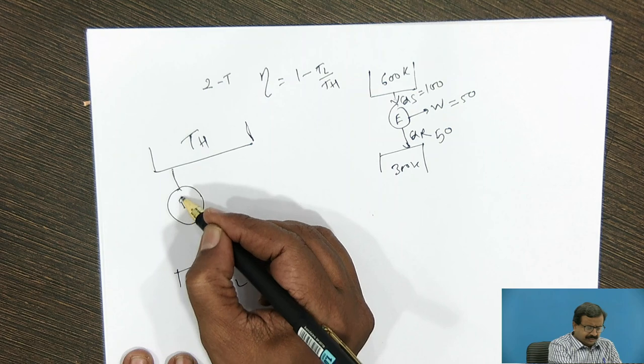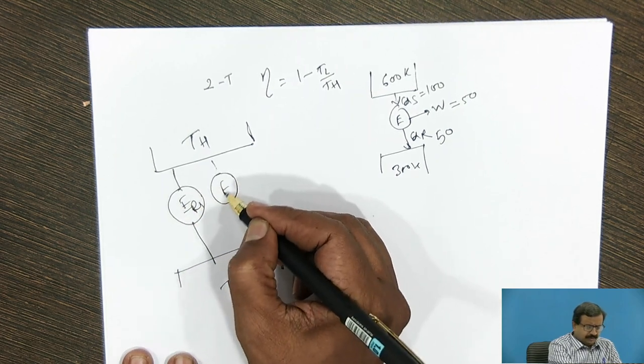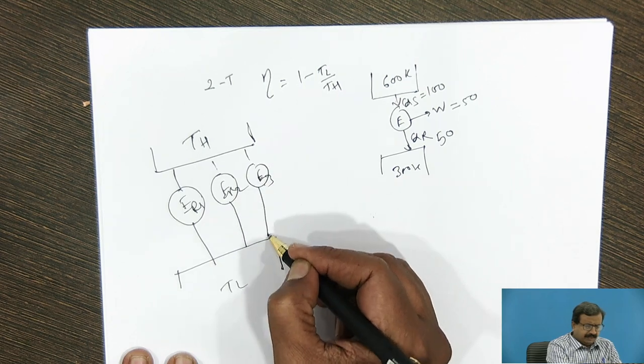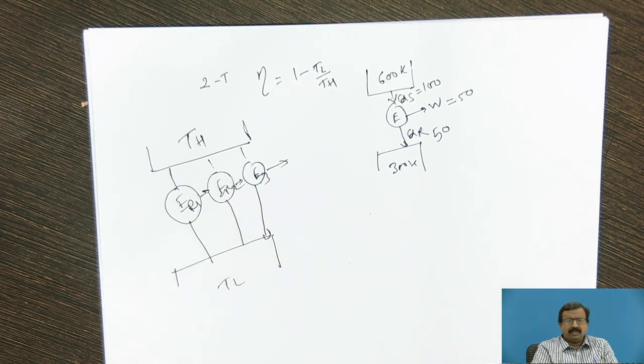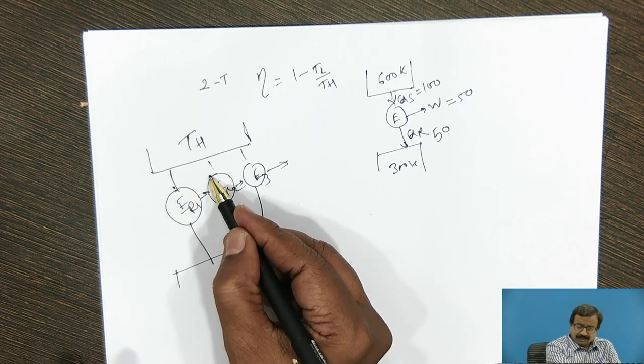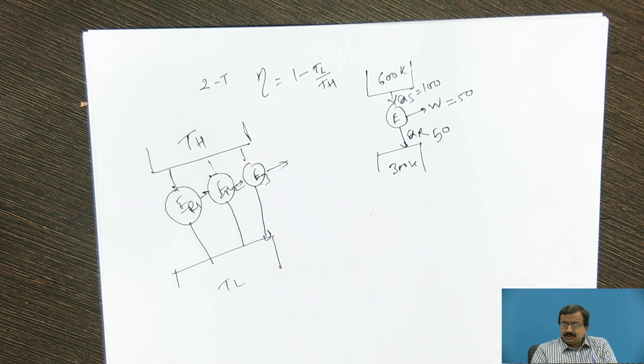If two reservoirs are given and I have any reversible engine, suppose I have these two reservoirs, say TH and TL. If I have one engine, say reversible 1, then reversible 2, then say reversible 3 and so on, they will produce certain amount of work, W1, W2, W3. So Carnot says that you take any engine, its efficiency is same. What it means? This engine may take 100 joules, this engine may take 2000 joules, this engine may take one mega joule, it may reject some different values.